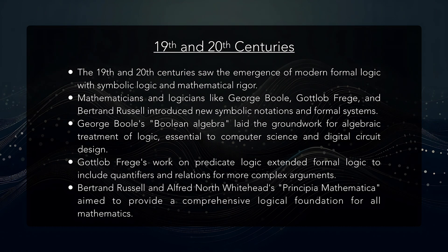The 19th and 20th centuries saw the emergence of modern formal logic, characterized by the development of symbolic logic and mathematical rigor. Mathematicians and logicians such as George Boole, Gottlob Frege, and Bertrand Russell revolutionized the field by introducing new symbolic notations and formal systems. Boole's Boolean algebra laid the groundwork for the algebraic treatment of logic, which became fundamental to computer science and digital circuit design. Frege's work on predicate logic extended the scope of formal logic to include quantifiers and relations, allowing for more complex and nuanced arguments. Russell and Alfred North Whitehead's monumental work Principia Mathematica aimed to provide a comprehensive logical foundation for all of mathematics, further solidifying the importance of formal logic in the foundations of mathematics.